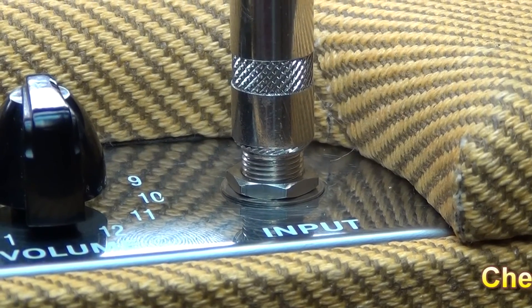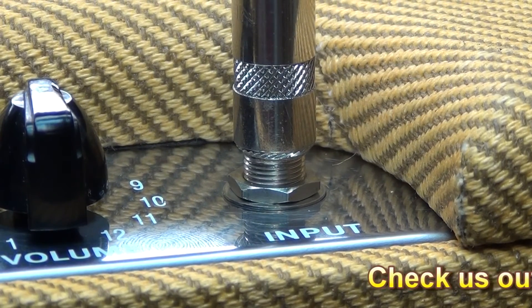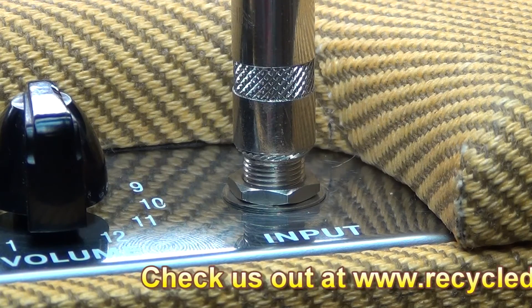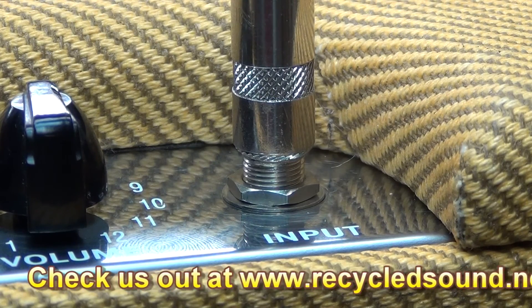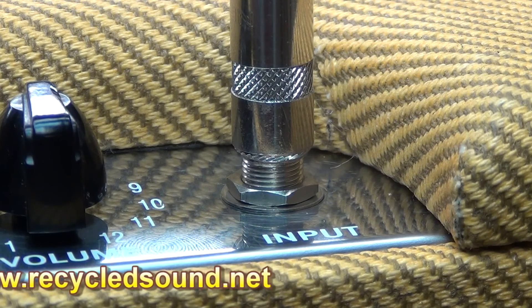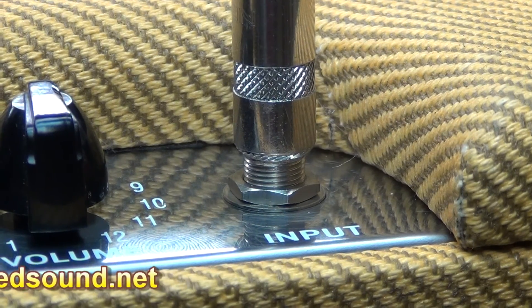Well, there you go. That's what you want to see when you're looking at a Blues Junior. Is a metal Switchcraft input. Working like it should. Hope the video helped you all.